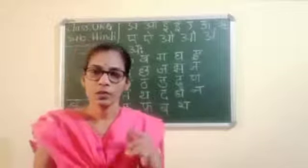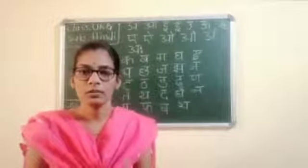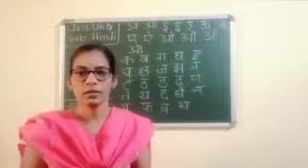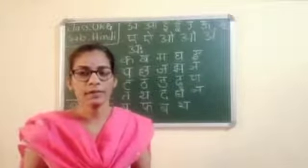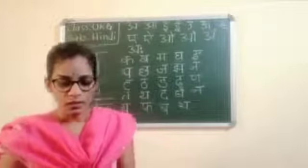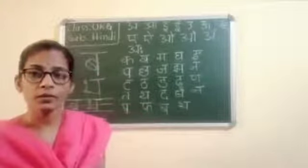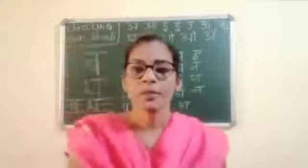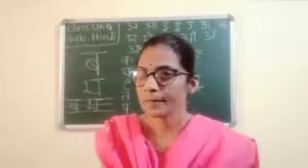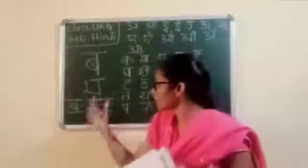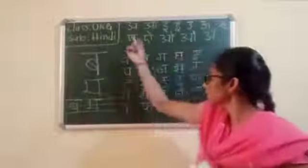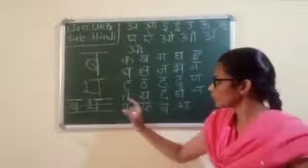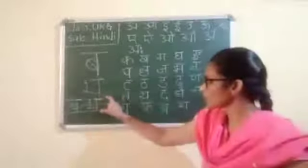First you read — Bha, Bha, Bha — like this. You read and write. And also you write while you read. Practice these two letters. One letter for only one box. Read and write.